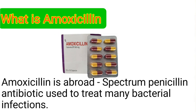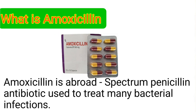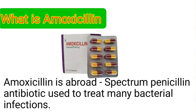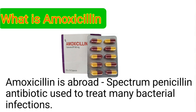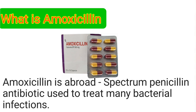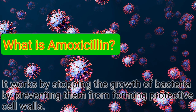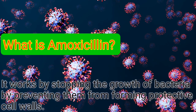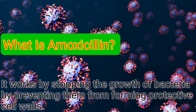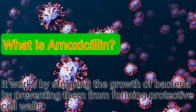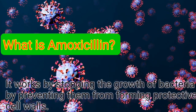Amoxicillin. What is Amoxicillin? Amoxicillin is a broad-spectrum penicillin antibiotic used to treat many bacterial infections. It works by stopping the growth of bacteria by preventing them from forming protective cell walls.